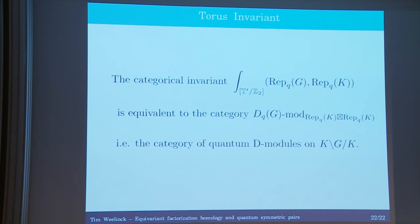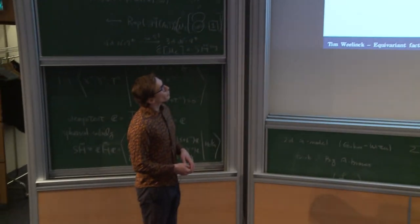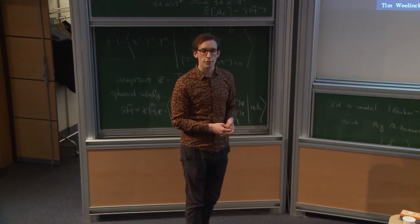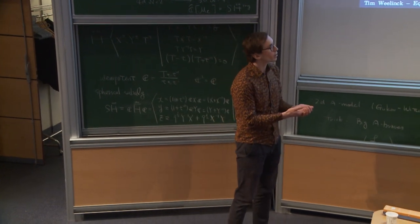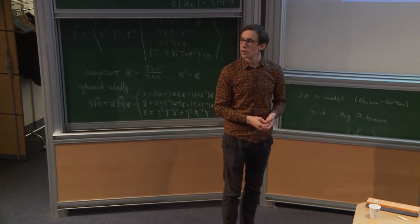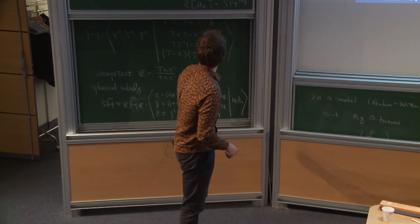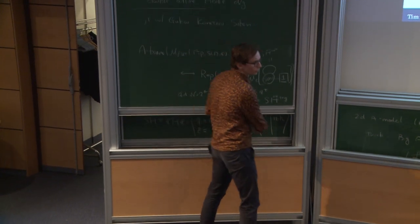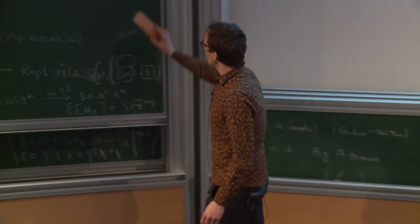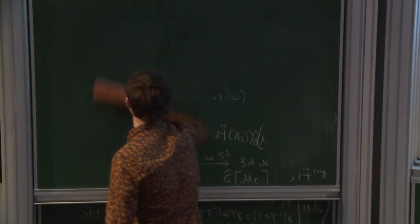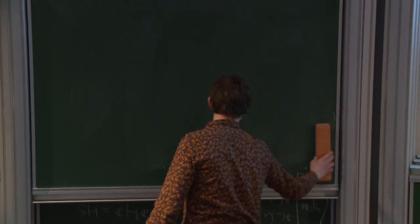Let me say something more since I still have some time left. This is interesting and quite nice — this category of modules appears from the equivariant factorization homology construction, which means it has lots of extra structure. Let me try to draw a picture to see what kind of things we can do. Meanwhile, if there are any questions about anything, this would be a good time to ask.